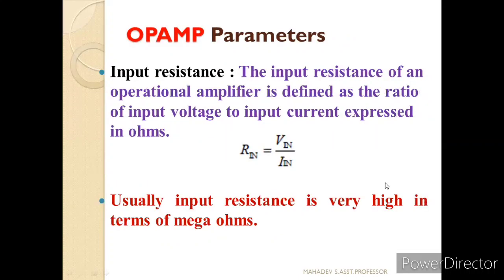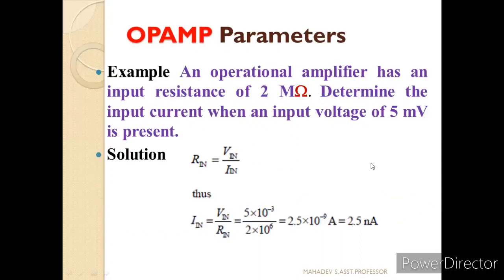Similarly, we have input resistance, defined as the ratio of input voltage to input current expressed in ohms: RIN = VIN / IIN. Usually the input resistance is very high, in the range of megaohms. For example, an operational amplifier has an input resistance of 2 megaohms. To find the input current when the input voltage is 5 millivolts: IIN = VIN / RIN = 5 mV / 2 MΩ = 2.5 nanoamperes.